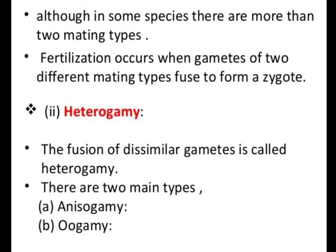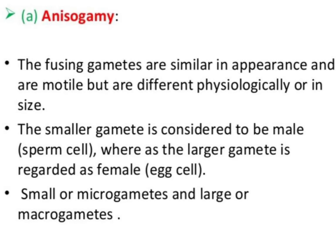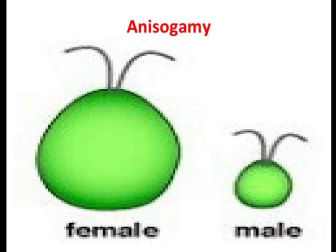Heterogamy is the fusion of two dissimilar gametes. It is of two types: anisogamy and oogamy. In anisogamy, the fusing gametes are similar in appearance and are motile, but differ physiologically or in size. The smaller gamete is considered male (micro gamete) and the larger gamete is considered female (macro gamete).